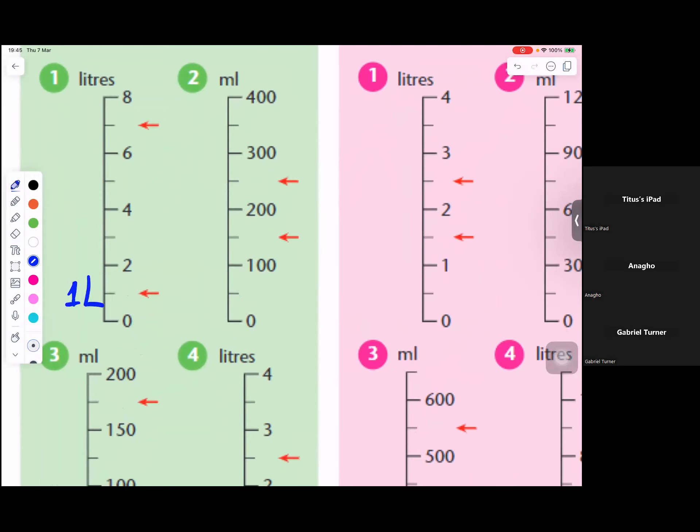Liter, capital L. This one at the top there is seven, so that's seven liters. On this other side, the unit is milliliters. So in the middle of 100 and 200, what number is in the middle? 100 and 200.